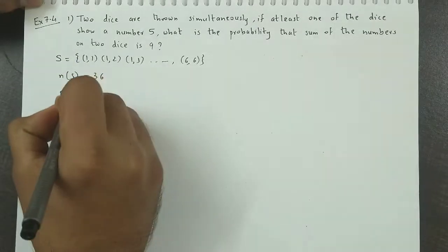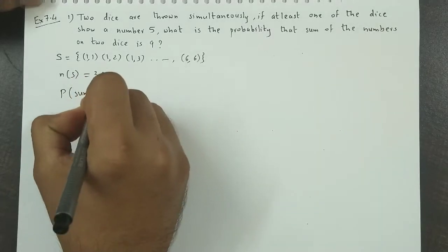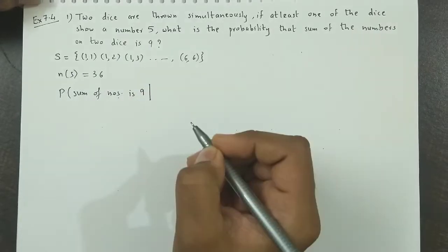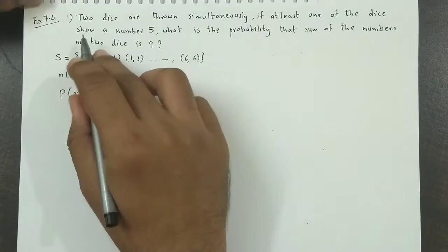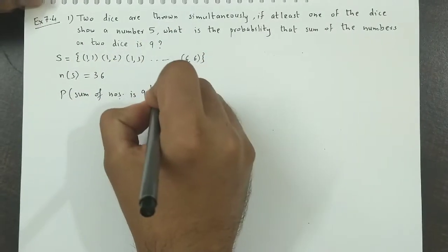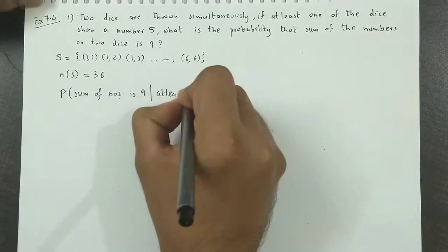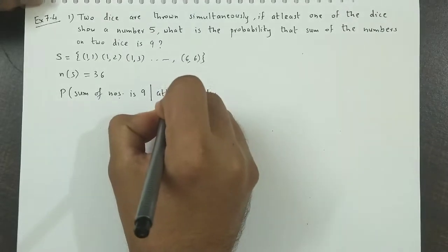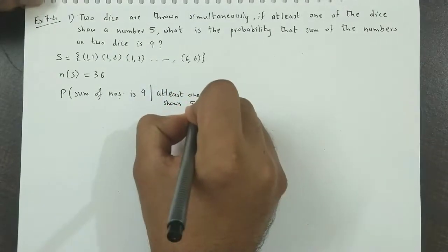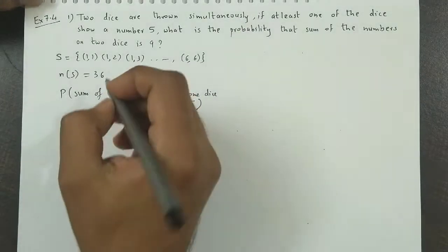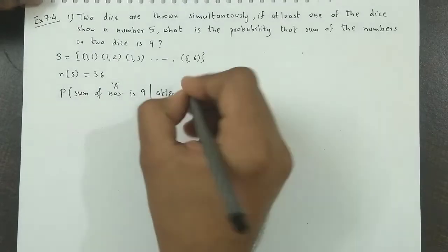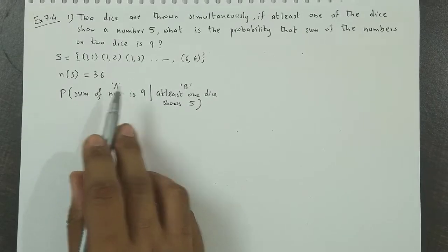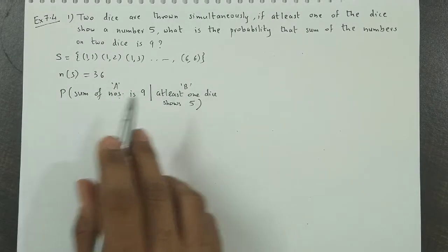So we're asked the probability that the sum of numbers is 9. The sum of numbers is 9 given that at least one of the dice shows 5. At least one of the dice shows the number 5, so we give this as event A. And we give this as event B. So basically we find the probability of A given B.